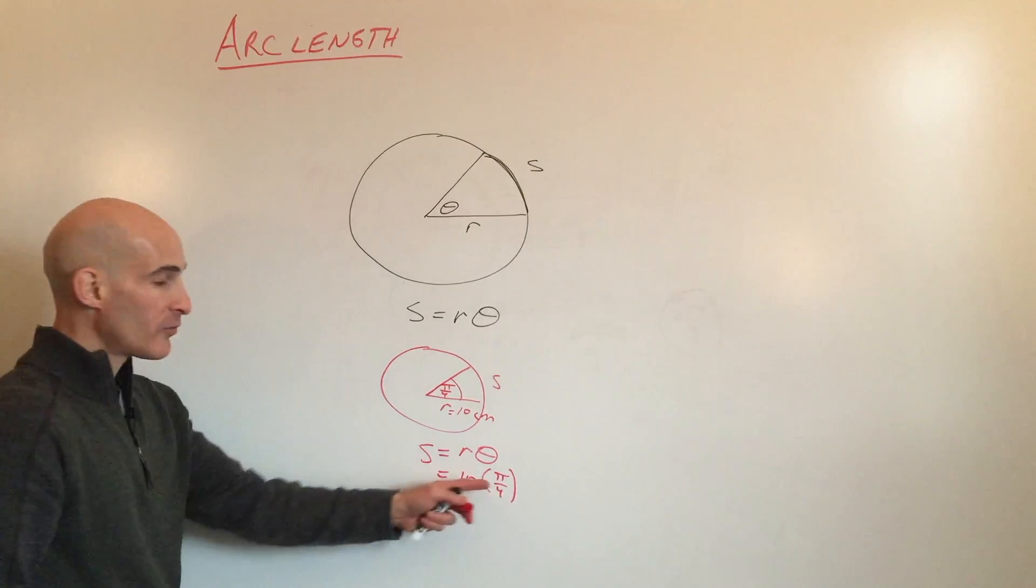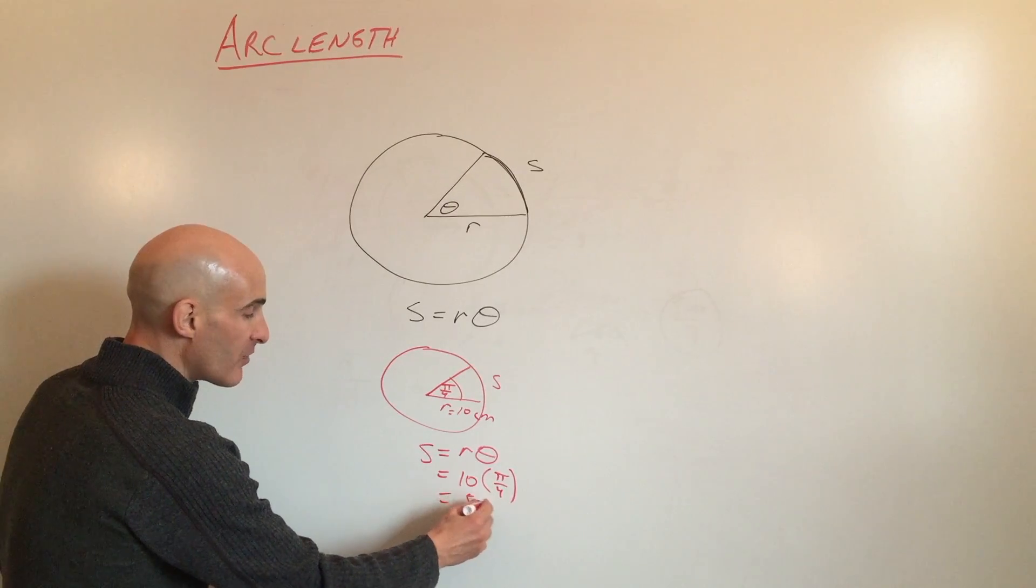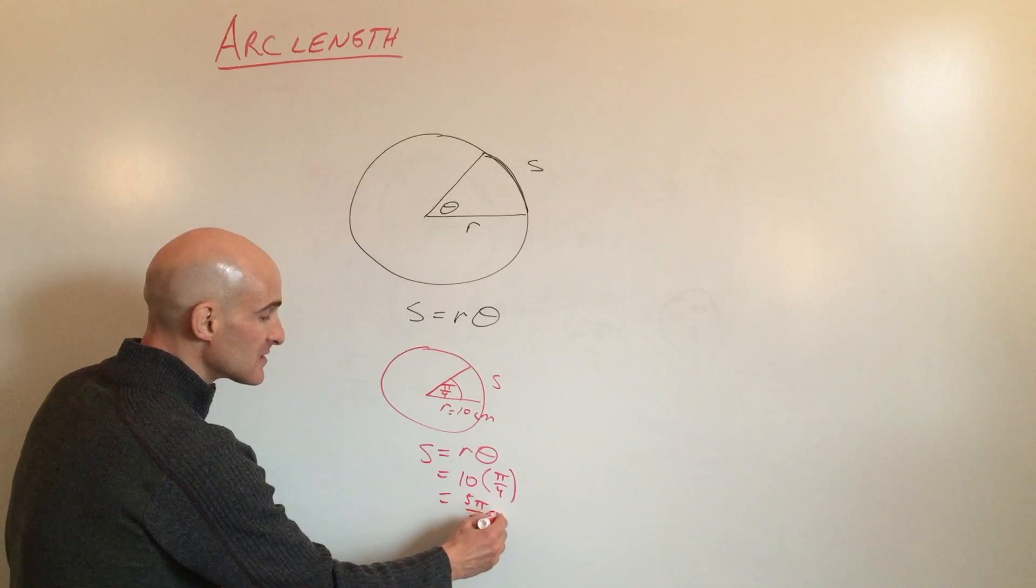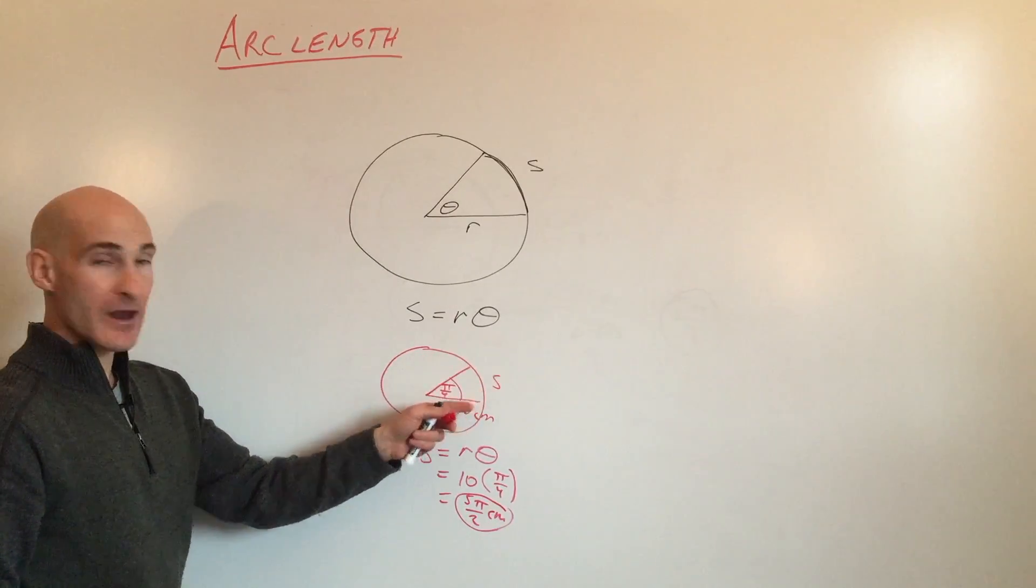And if we multiply those together, we get 10 pi over 4, which reduces down to 5 pi over 2 centimeters. That's an exact answer for the length of that arc.